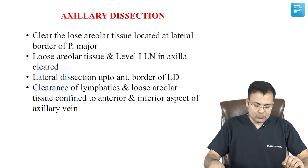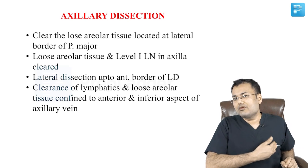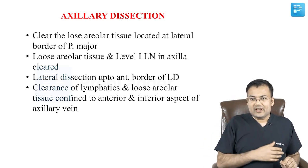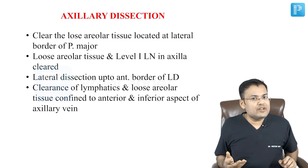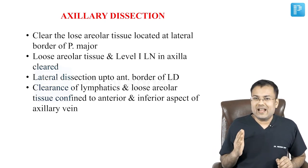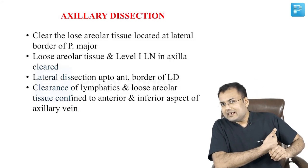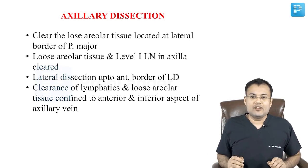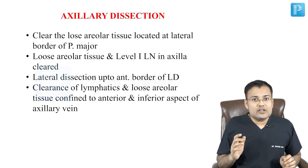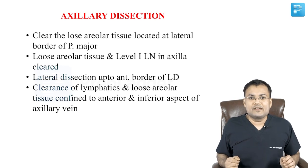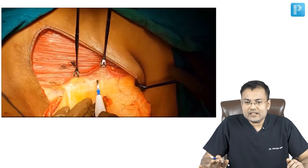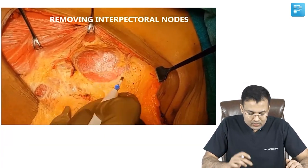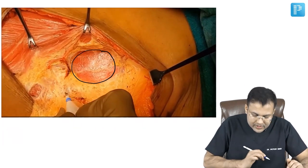For axillary dissection, we have to clear the loose areolar tissue located at the lateral border of pectoralis major. Loose areolar tissue and level 1 lymph nodes in the axilla are removed easily. Lateral dissection is performed up to the anterior border of latissimus dorsi. Importantly, the clearance is confined to the anterior and inferior aspect of the axillary vein.